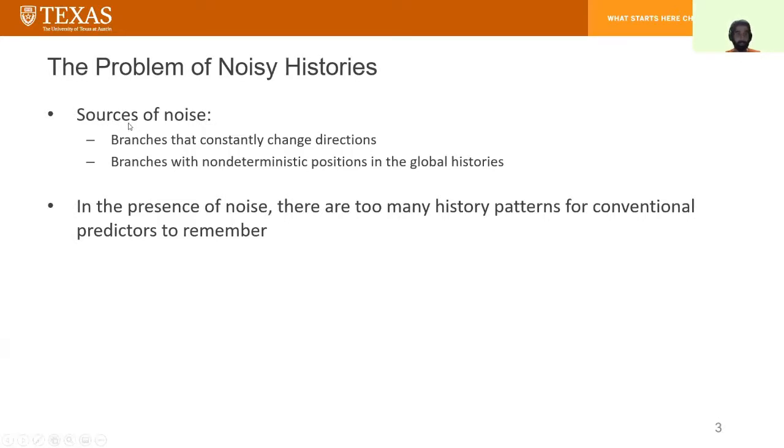There are two sources of noise. Branches that constantly change directions and branches with non-deterministic positions in the global branch histories. In the presence of noise, there are too many history patterns for conventional predictors to remember.